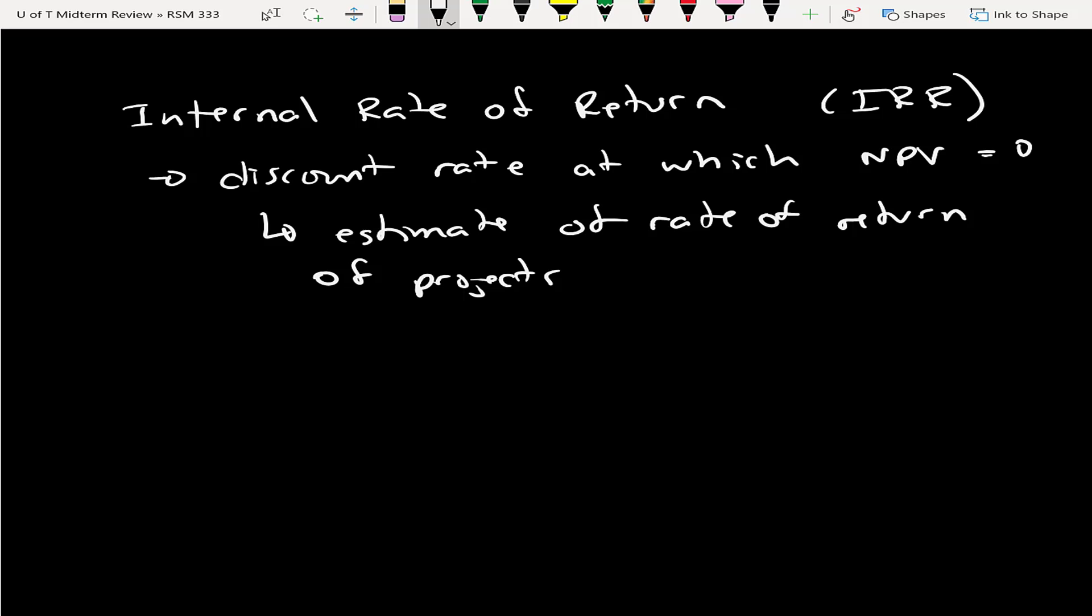There are a couple of negatives with the internal rate of return. One, it doesn't tell you the dollar value of the return, it tells you the percentage. The second is, in unique cases, it can give you two answers. If the cash flows change directions, then it gives you two mathematical answers, which doesn't make sense.